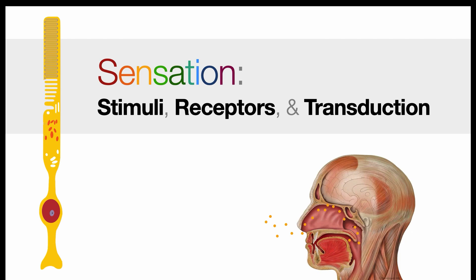Stimuli, the things being sensed. Receptors, the parts of the body that detect the stimuli. And transduction, the process in which those stimuli become neural signals that the brain can understand.